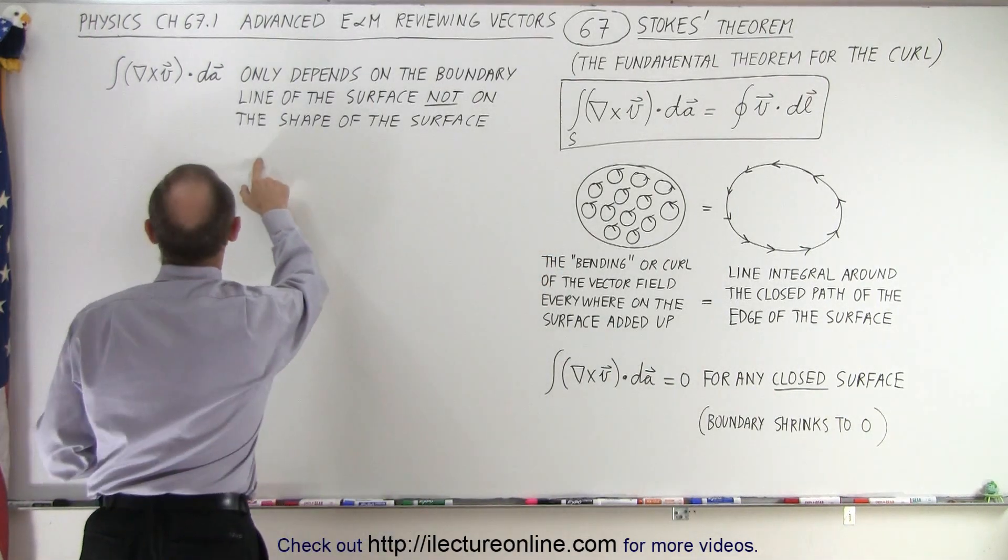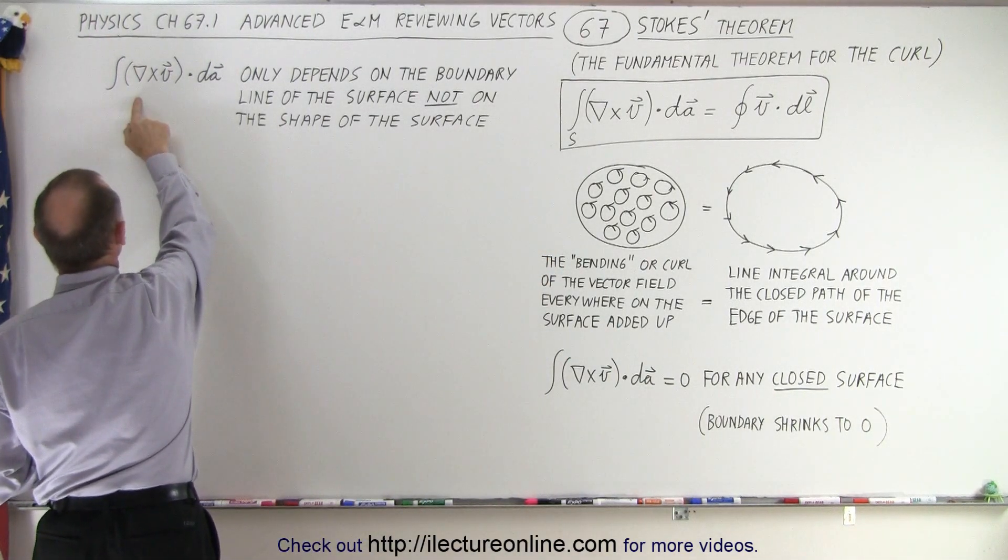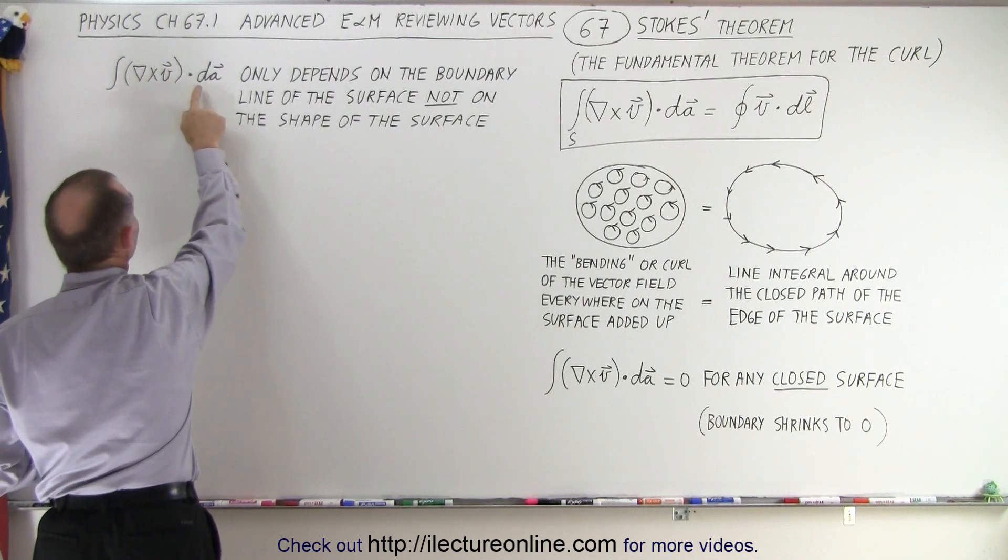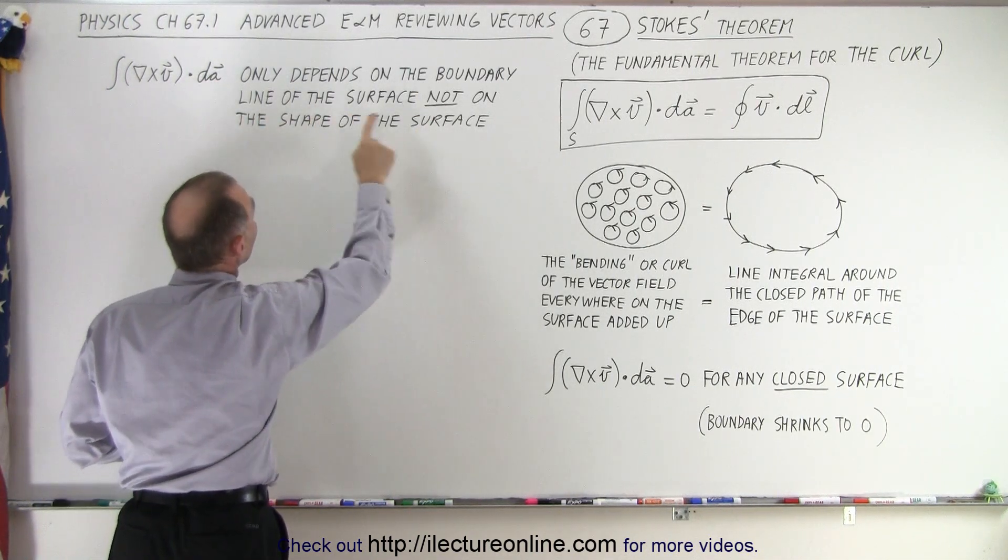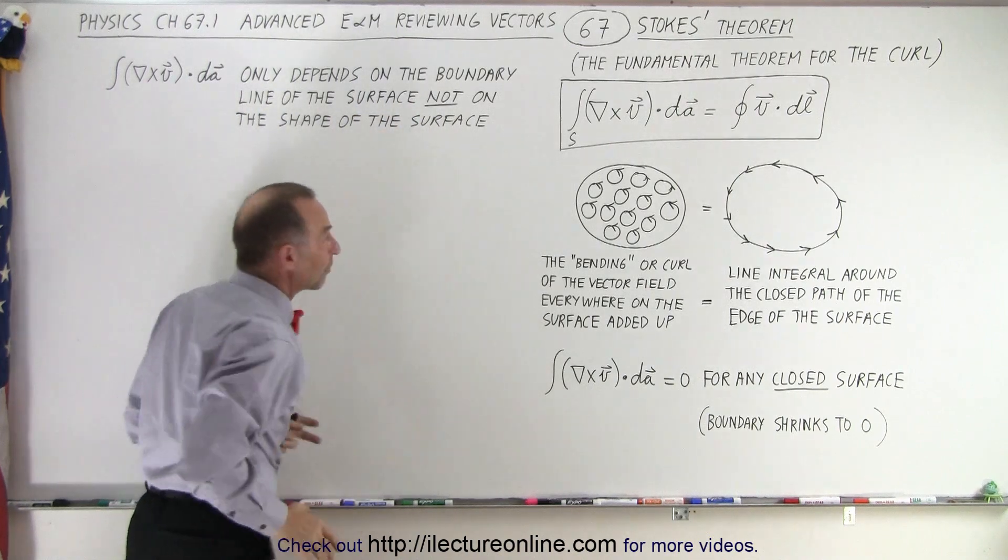Now, over here, we can see that the integral on the left side, the curl of the vector field dot DL, only depends on the boundary line of the surface, not on the shape of the surface.